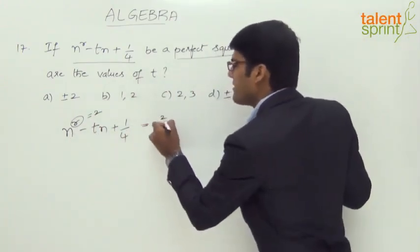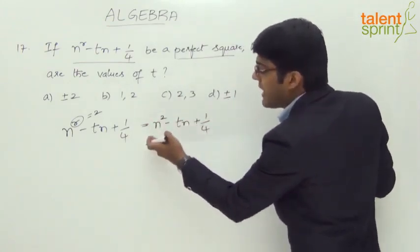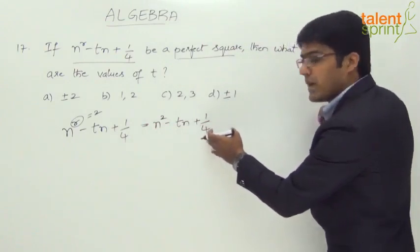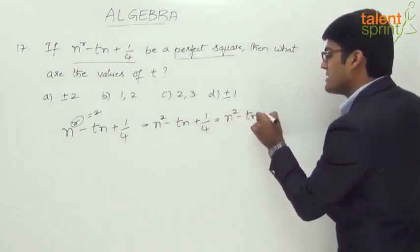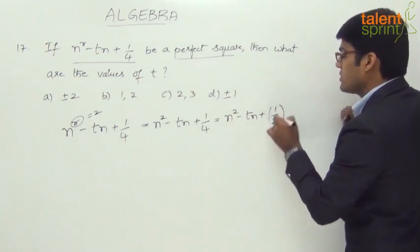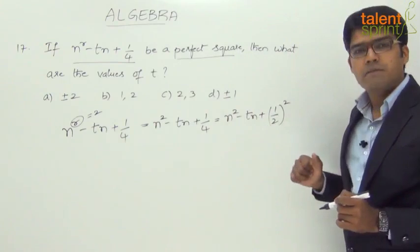So this becomes n^2 minus tn plus 1/4, which is like a^2 minus 2ab plus b^2. If you look at it, it can be taken as n^2 minus tn plus (1/2)^2. B in our case is 1/2, so (1/2)^2 becomes 1/4.